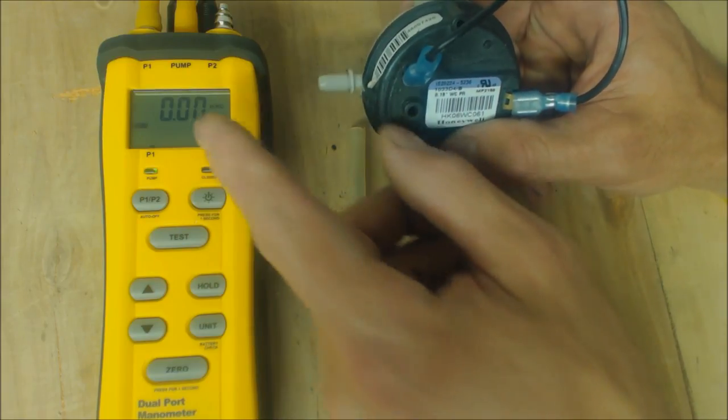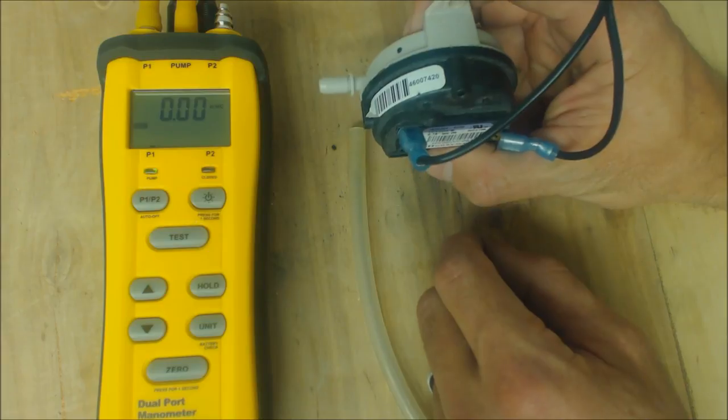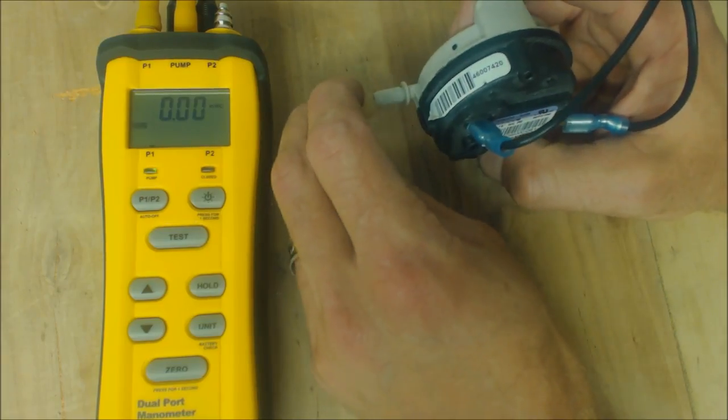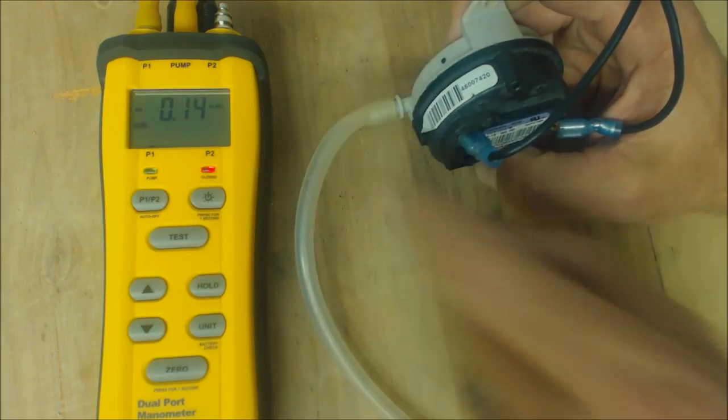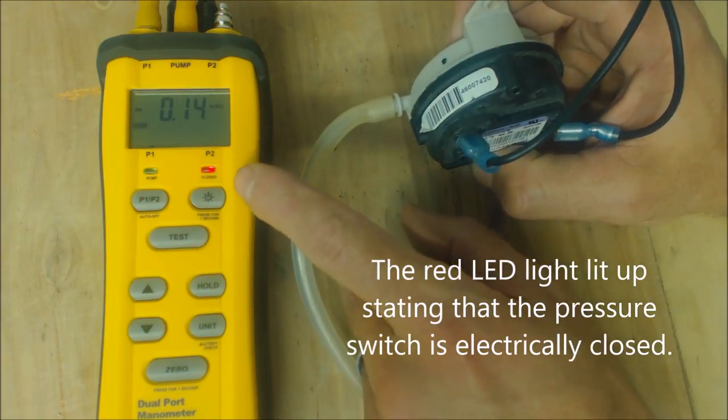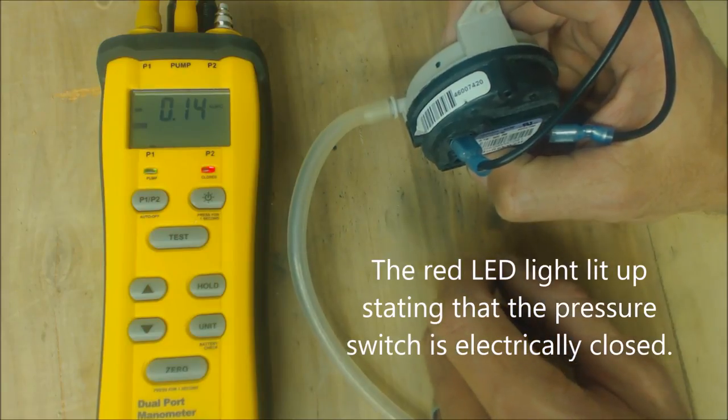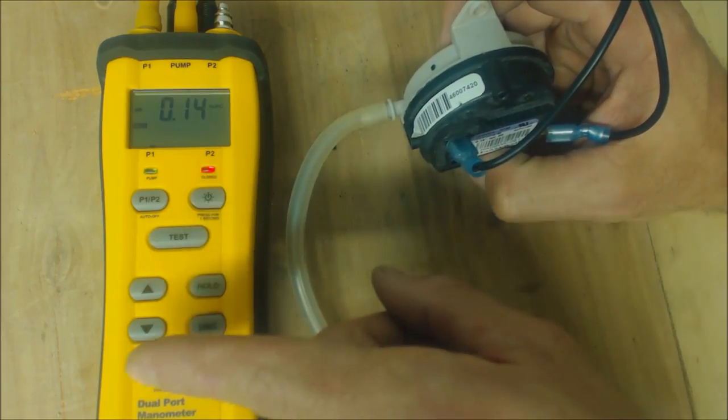We have the hold button flashing. We're going to turn the pressure switch vertically like the way it would be in a furnace and attach this. Right there it said it closed at 0.14. Now we're going to see what it's going to open at, meaning when it opens the electrical circuit.